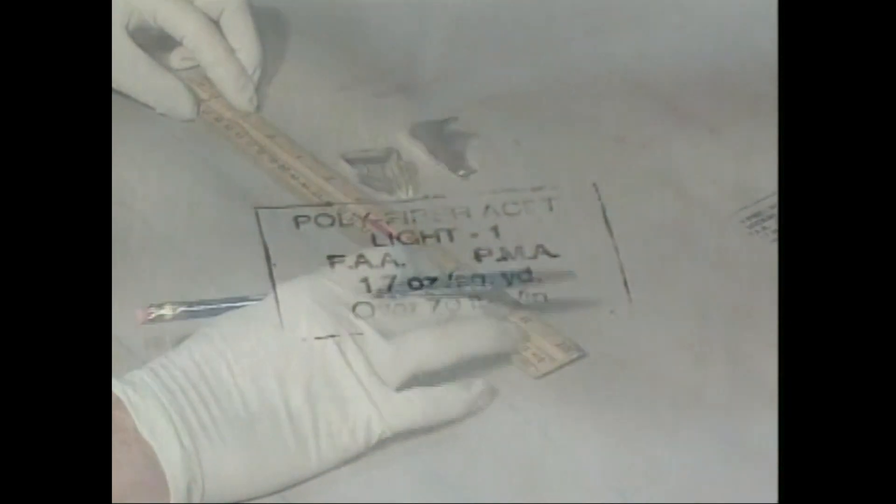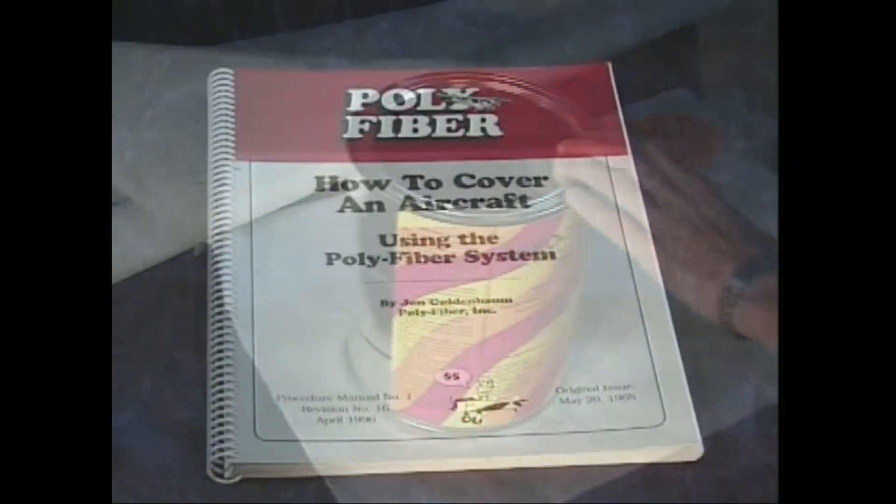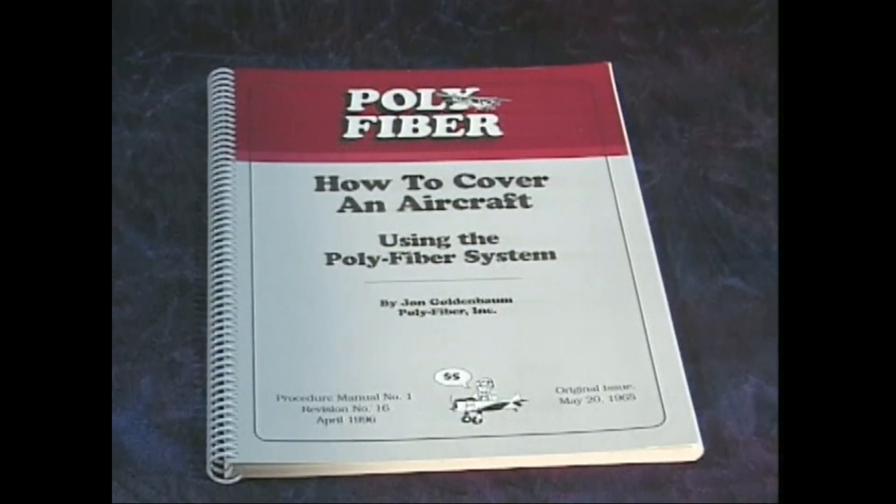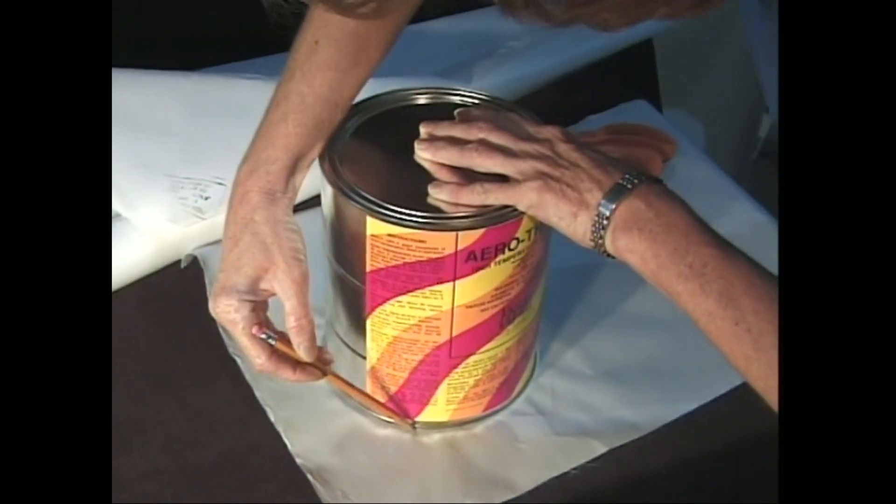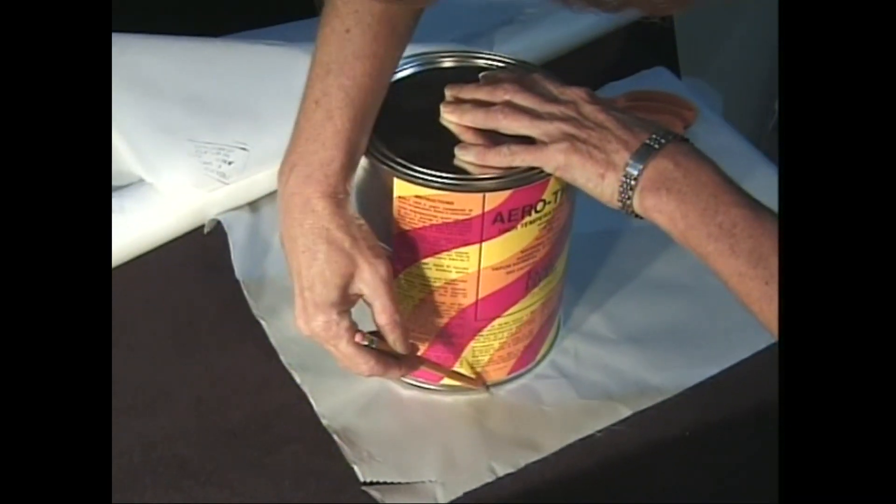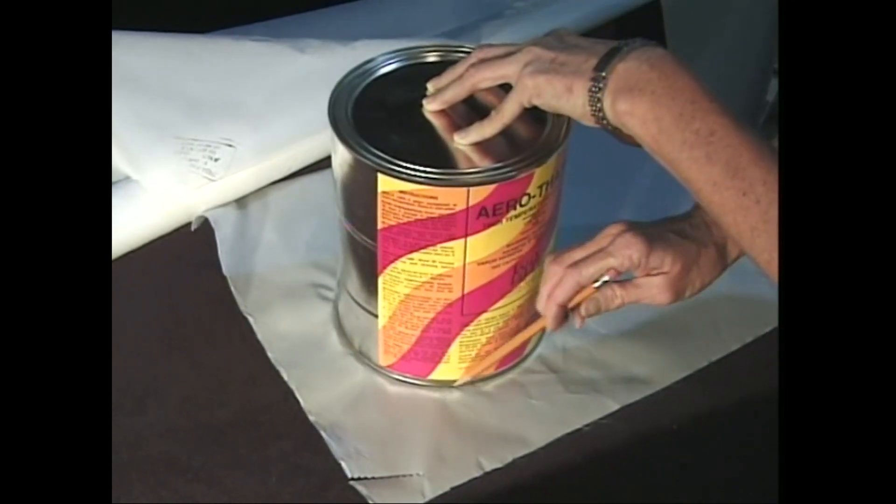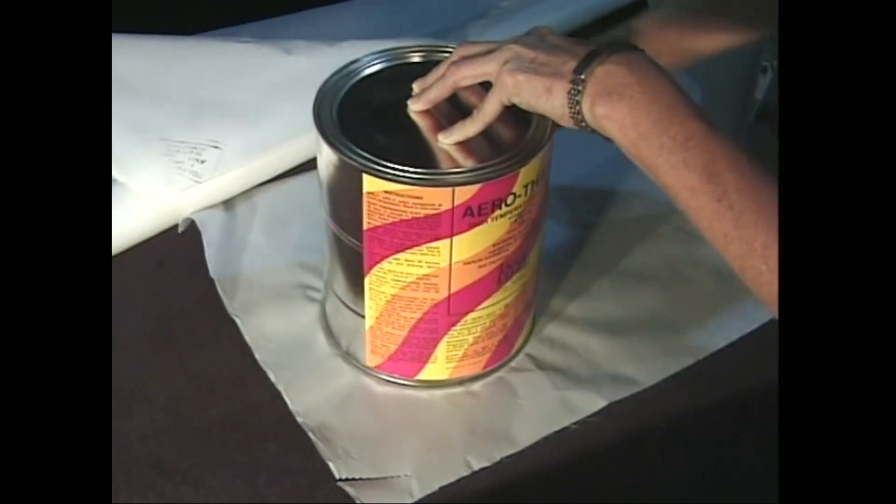Next, cut out all the specially shaped gussets. Pre-shrunk polyfiber style light one, 1.7 ounce fabric works great for these. Read pages 41 and 42 in your manual concerning pre-shrinking fabric for gussets. For inspection hole gussets, a gallon can is the perfect template. Be neat. You will see the outline of the doily even after the plane is painted.